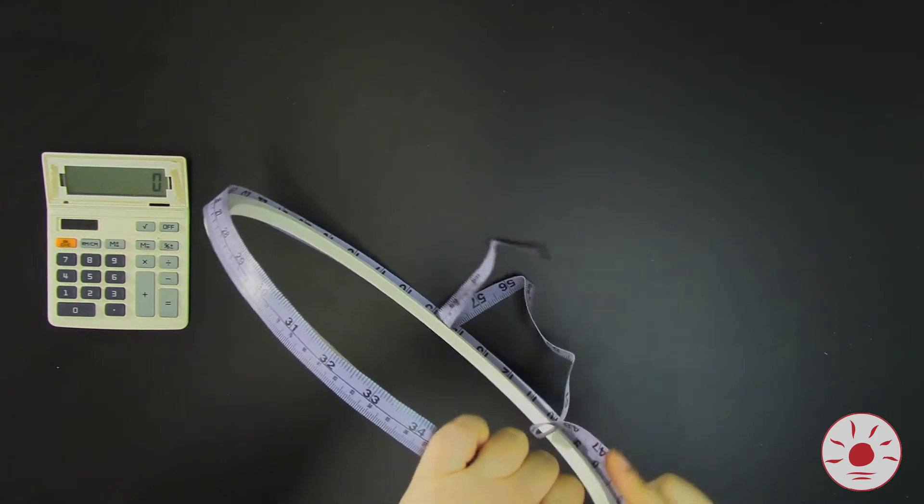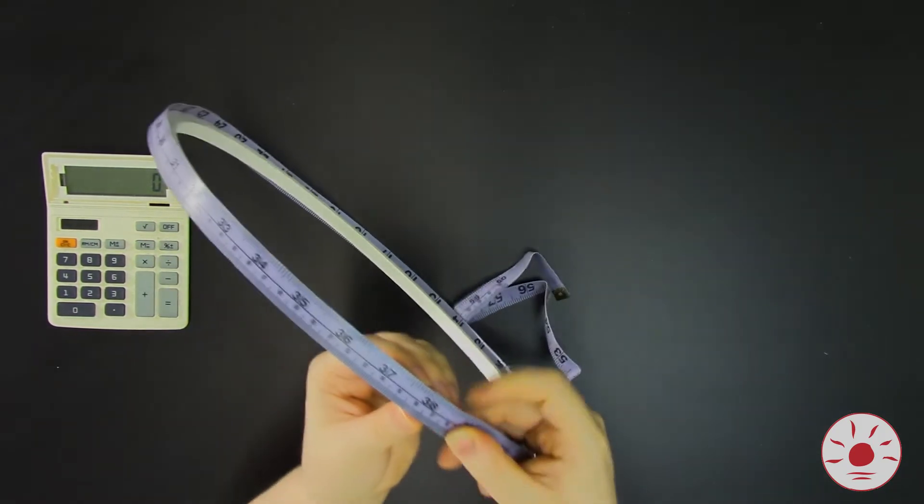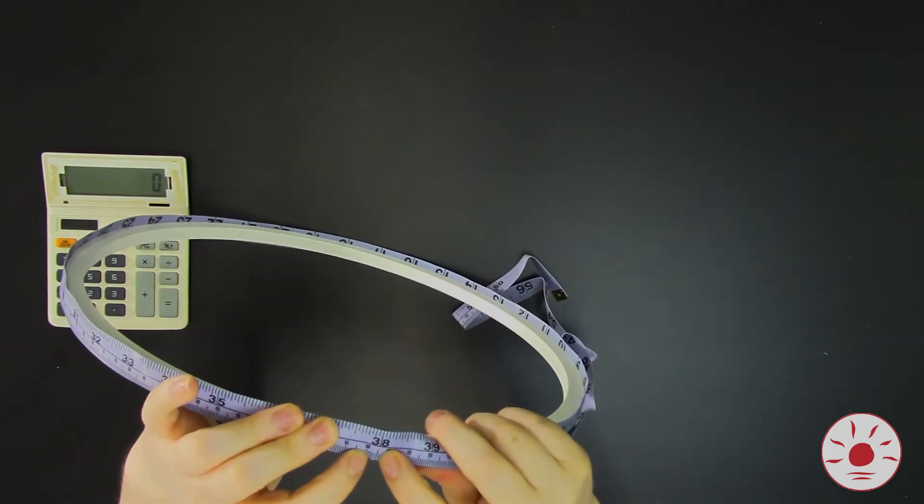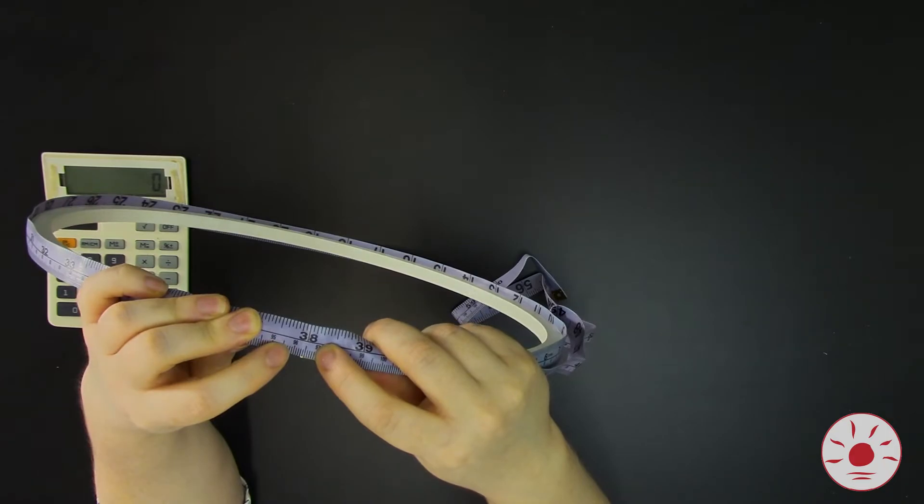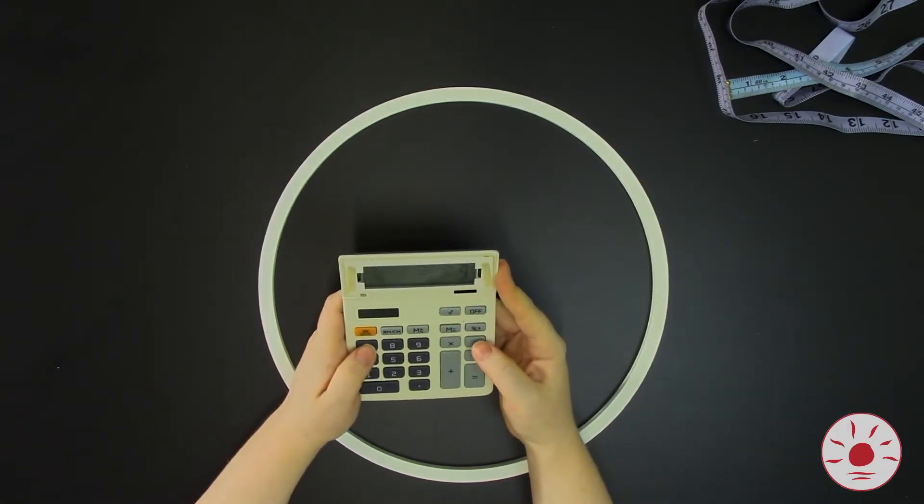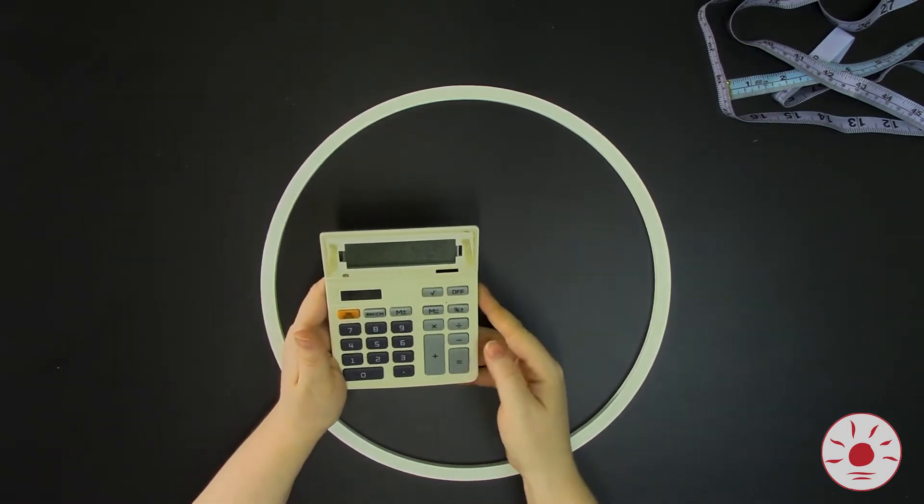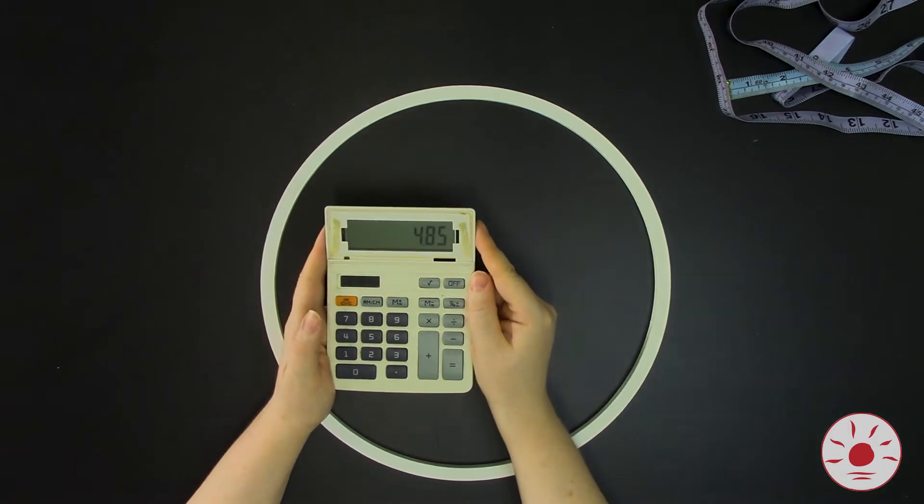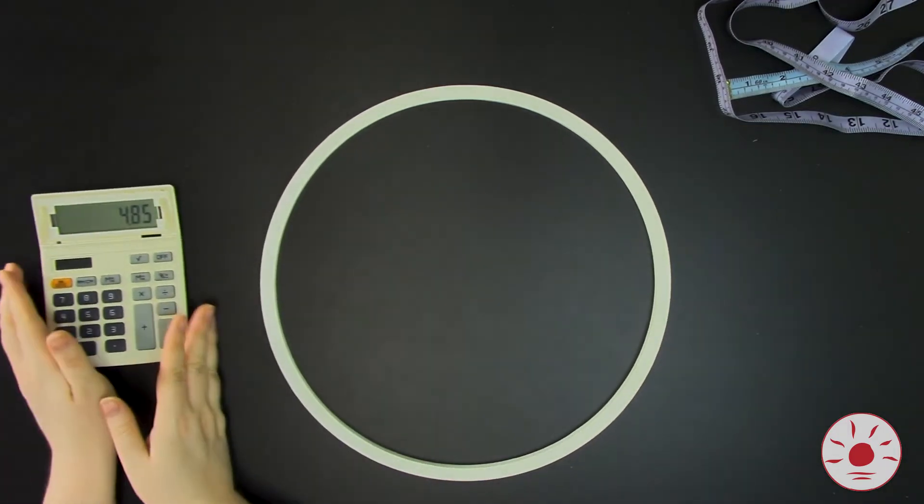Or you could do what I'm doing here and measure around your hoop with your measuring tape and divide that number by 20. As you can see, my hoop is 97 centimeters around. I'm going to divide 97 by 20 with my calculator. That's going to give me 4.85 or 4 centimeters, 8 millimeters, and half a millimeter.